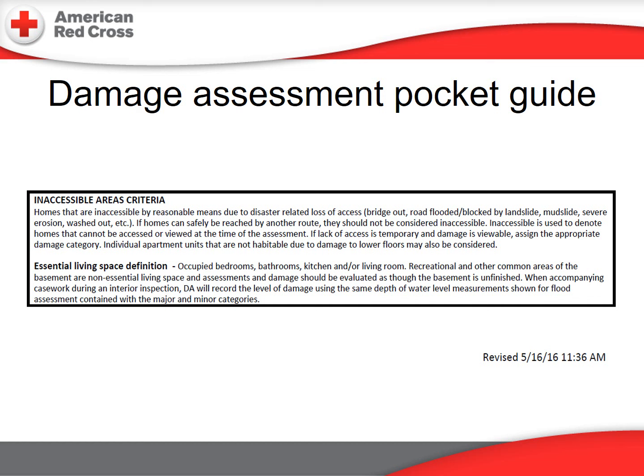Two basic definitions to emphasize. First, inaccessible areas: only homes that are inaccessible by reasonable means due to disaster-related loss of access are classified as inaccessible, indicating the home could not be viewed at the time of assessment. If you can assess the damage from a distance, enter a damage classification — don't simply enter inaccessible. Second, the new guide refers to 'essential living space,' defined as occupied bedrooms, bathrooms, kitchens, or living room. Basements are not essential unless they contain a needed bedroom, bathroom, or kitchen.